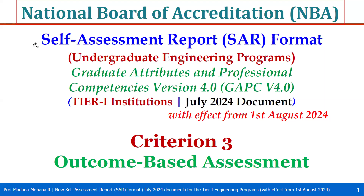Welcome back. We are discussing the National Board of Accreditation (NBA) self-assessment report format as per the revised manual of Tier 1 institutions, July 2024, with effect from 1st August 2024. In our previous videos, we covered Criterion 1 and Criterion 2. Now, in this video, we will see Criterion 3, that is outcome-based assessment.